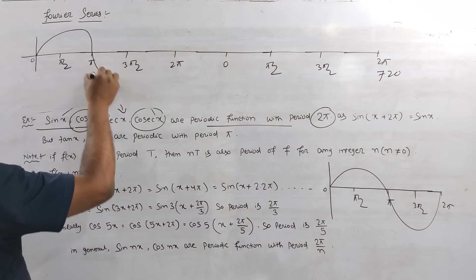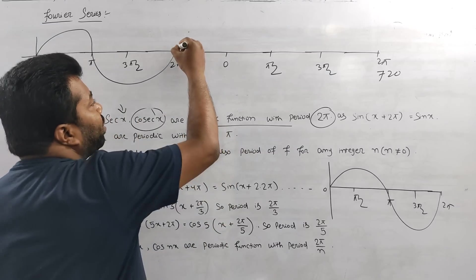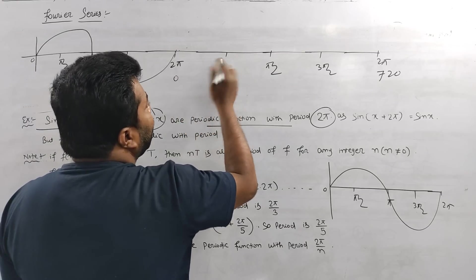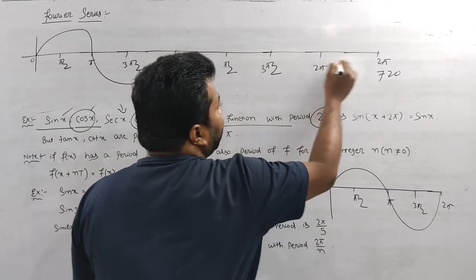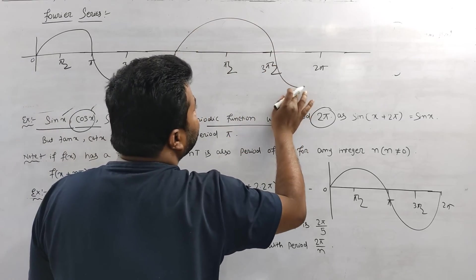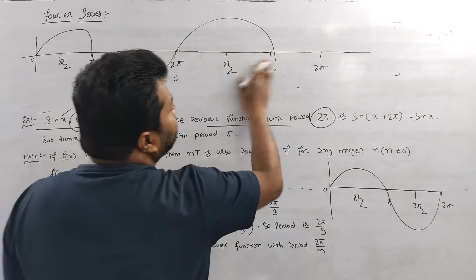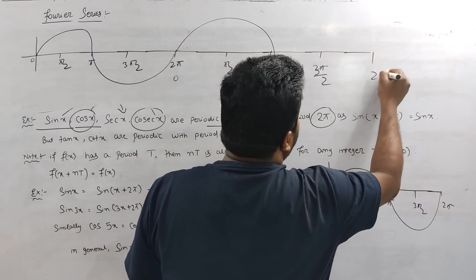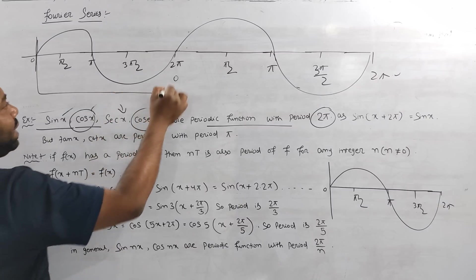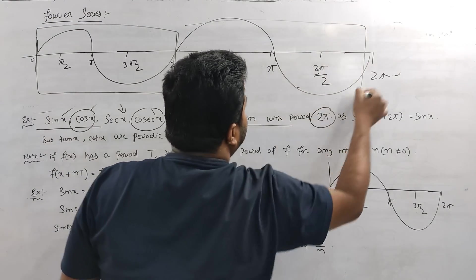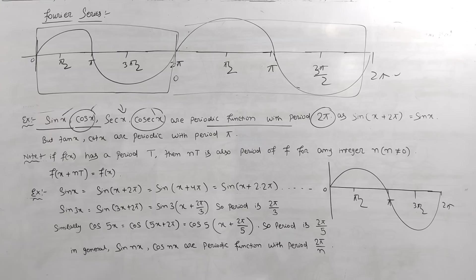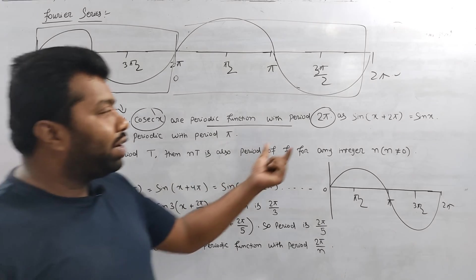We will look at the graph. The graph repeats from 0 to 2π, then from 2π to 4π, at values 0, π/2, 3π/2. The graph repeats in each interval. Sine x, cos x, and sec x, cosec x are periodic functions with period 2π.